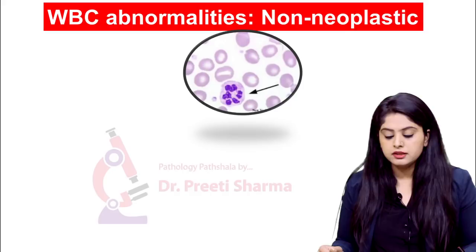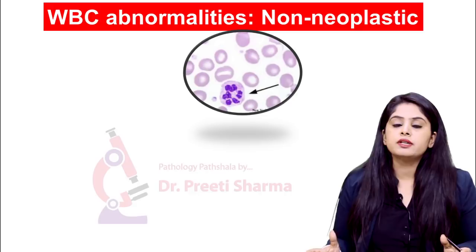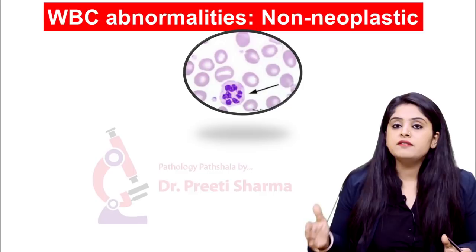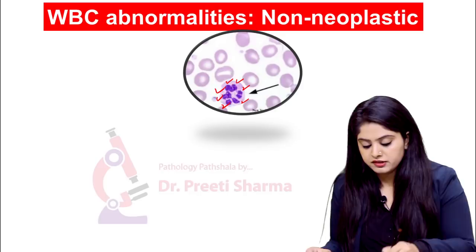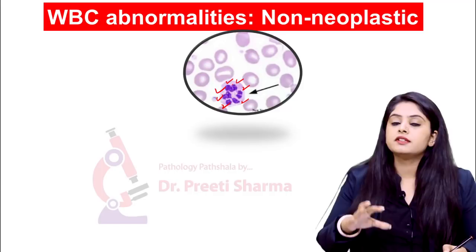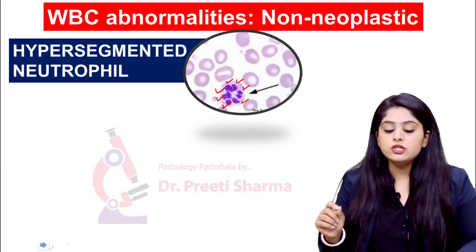Let us take the first one. What do you appreciate over here? This is a cell having multiple nuclear lobes — so this is a hypersegmented neutrophil. Neutrophil you can understand, but why hypersegmented? A neutrophil has three to five lobes. But over here you can see approximately six to seven lobes — obviously if it has more than three to five lobes, we now call this a hypersegmented neutrophil.